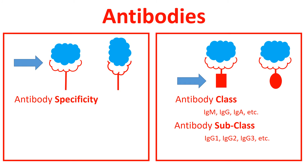The class and subclass of an antibody determine the properties of the antibody. In the panel on the right, one antibody has a rectangular tail while the other antibody has an oval tail. The antibody class can be IgM, IgG, IgA, or IgD.